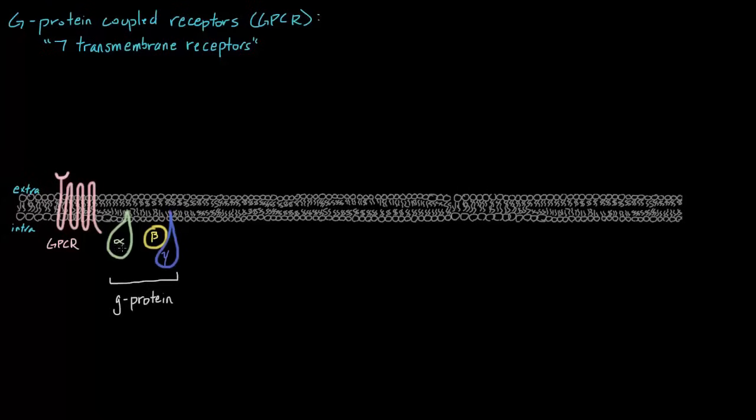You'll notice that I drew the alpha and gamma subunits with a little tail-looking thing in our cell membrane. And the reason why is because these are the two subunits, our alpha and gamma, which are attached to this cell membrane by what we call lipid anchors.